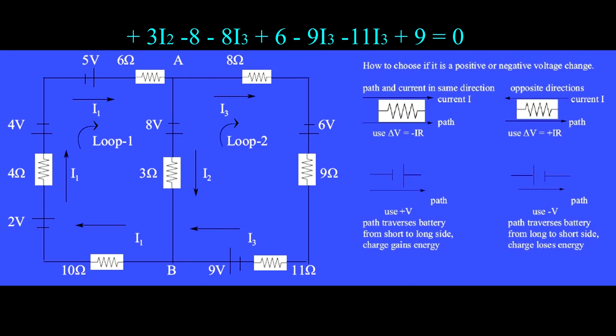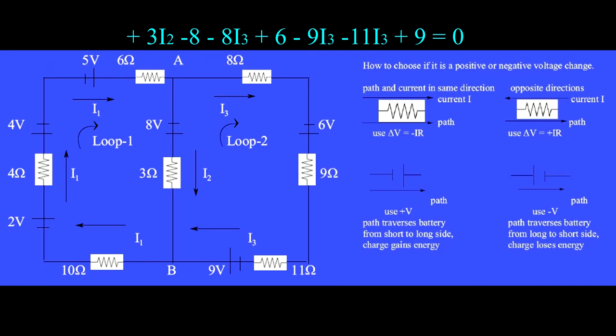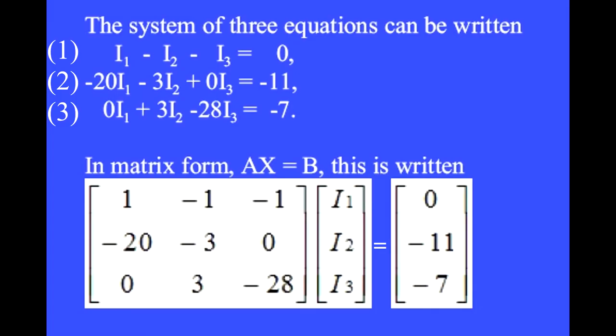Another possible loop is to go all the way around the outsides. But now we have 3 equations for our 3 unknowns, and it's a bit of algebraic footwork to solve for those 3 currents. The system of 3 equations can be written as this. To solve the system, you solve equation 1 for I1 and put that into equation 2, which you solve for I2 and then put that into equation 3, which finally gives you a number for I3. Working backwards, we get numbers for I2 and I1.